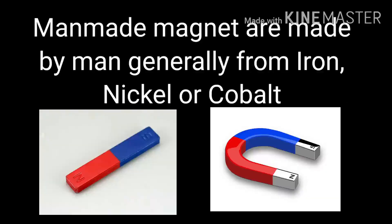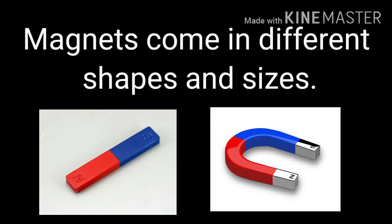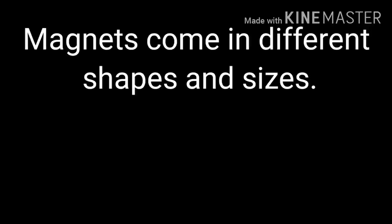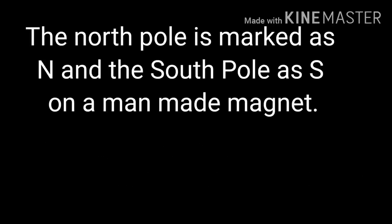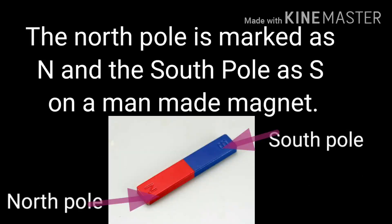Man-made magnets are made by man, generally from iron, nickel or cobalt. Magnets come in different shapes and sizes. All magnets have two ends called North Pole and South Pole. The North Pole is marked as N and the South Pole is marked as S on man-made magnets.